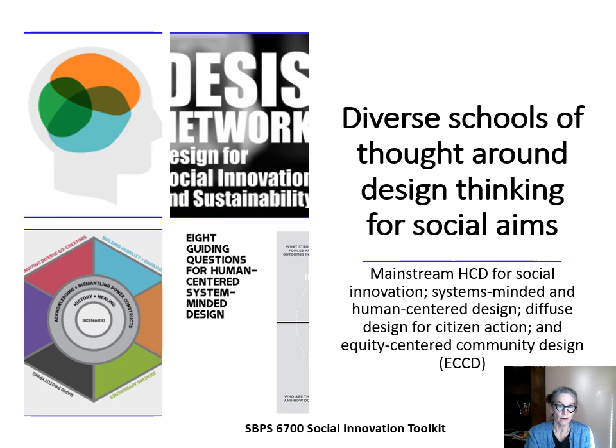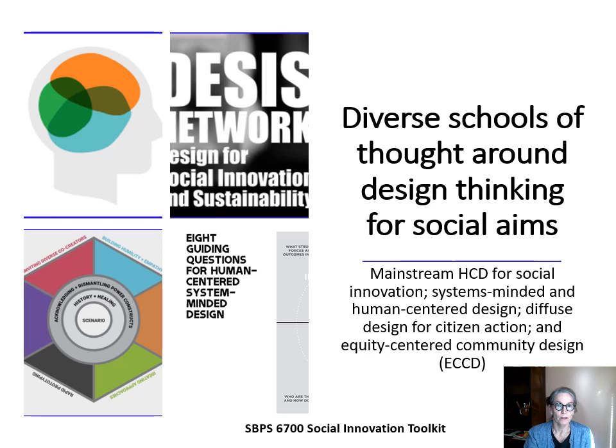First we talk about mainstream human-centered design for social innovation, which you've already encountered, and then systems-minded and human-centered design — both associated with Bay Area, California design and innovation organizations. Then I introduce Diffuse Design for sustainability, for citizen action in social innovation coming out of a global network of designers for sustainability. And finally we end back in the U.S. with equity-centered community design from the Critical Reaction Lab in St. Louis, tackling systemic injustices with youth. You have some readings behind these, and there are also optional websites to visit.